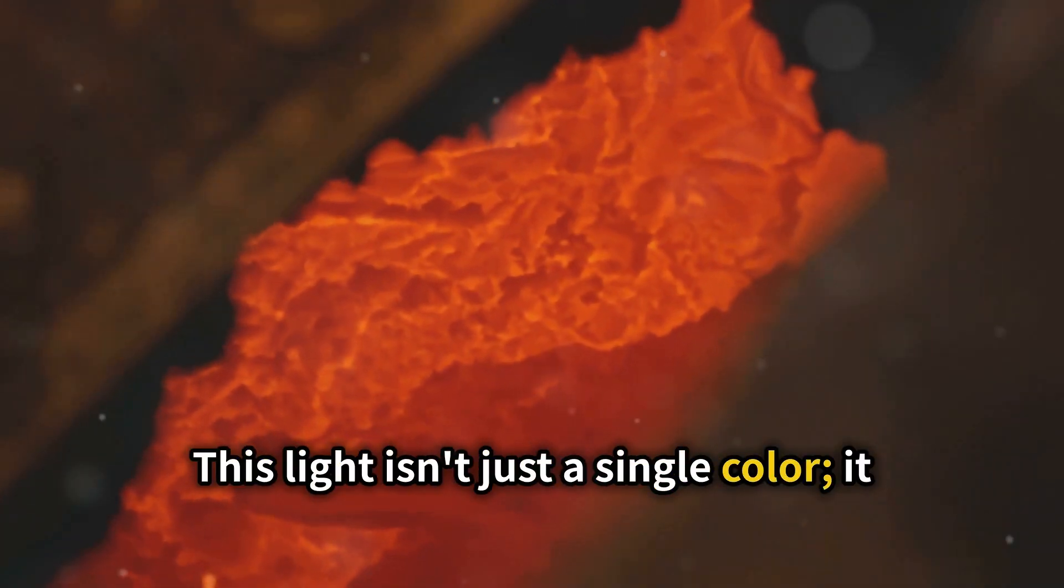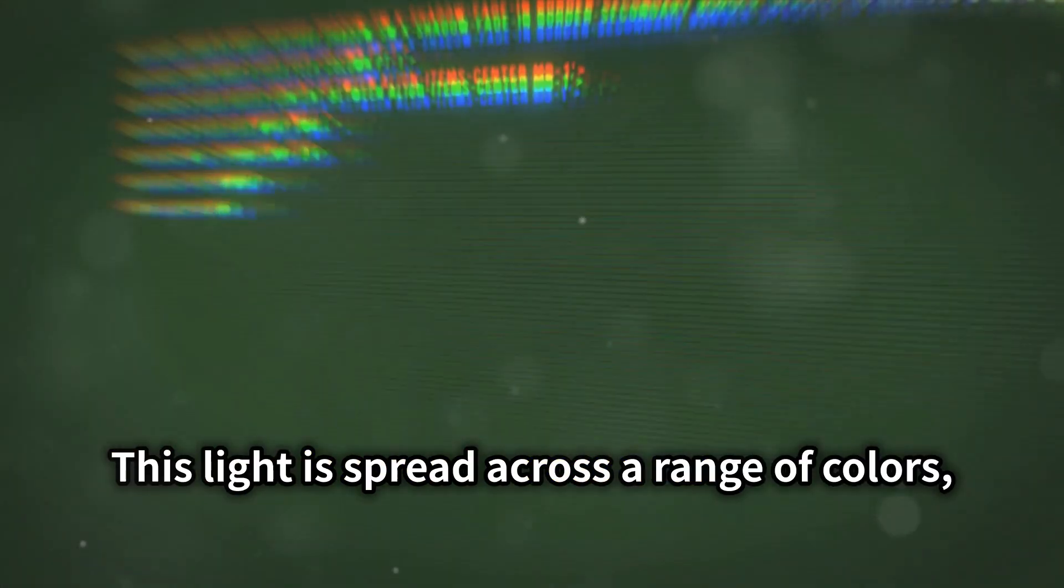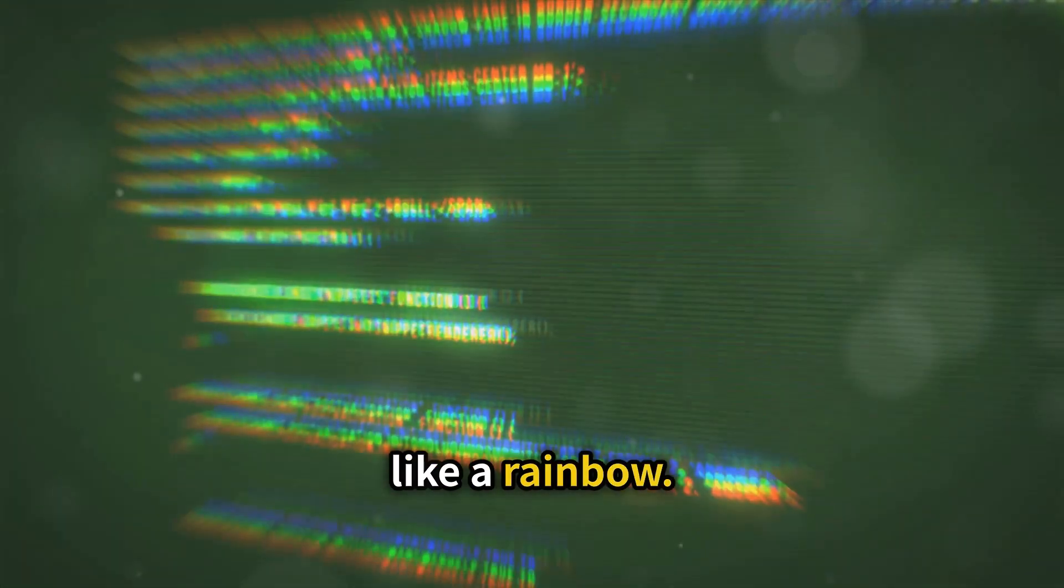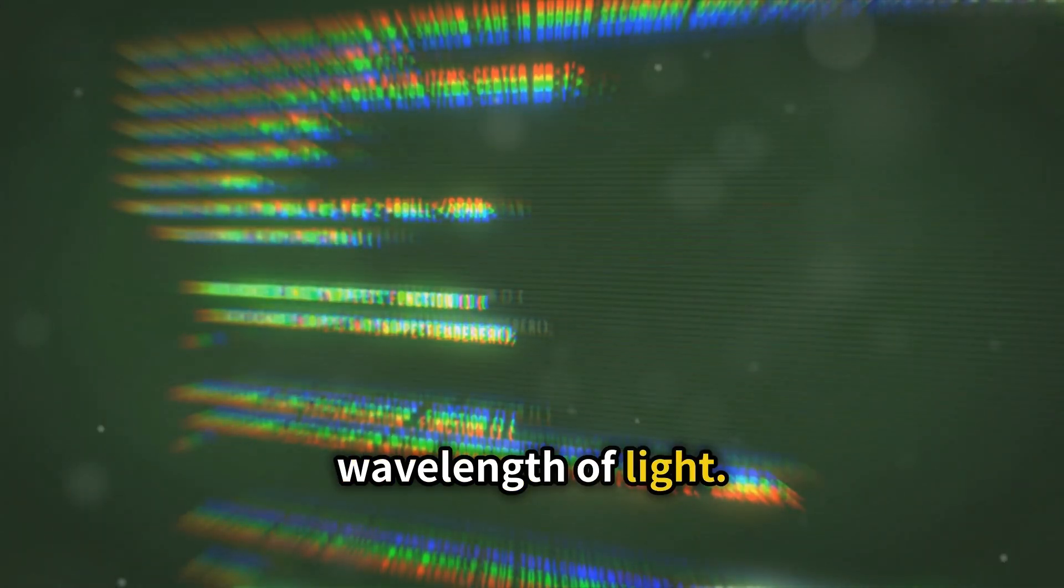This light isn't just a single colour, it spans a spectrum. This light is spread across a range of colours, like a rainbow. Each colour represents a different wavelength of light.